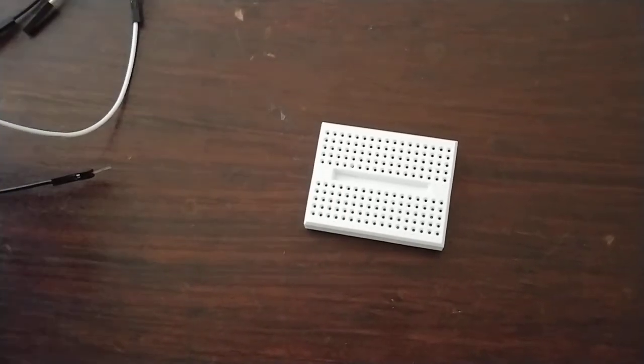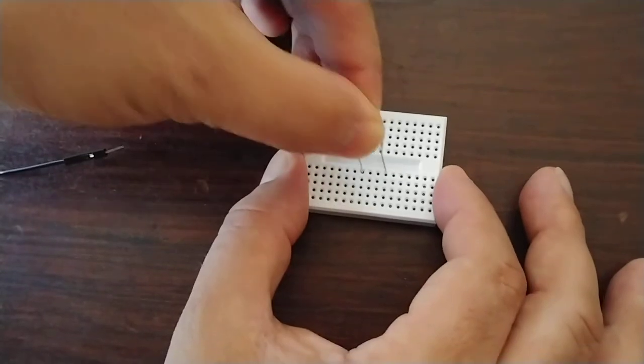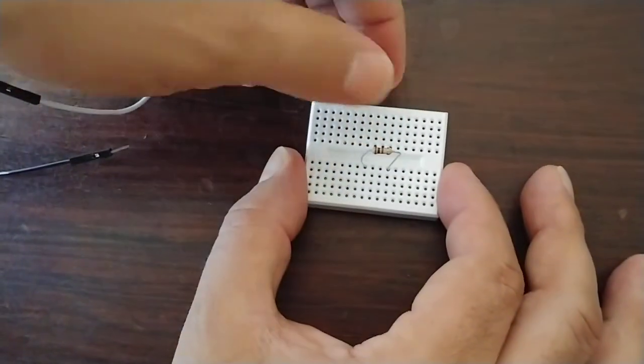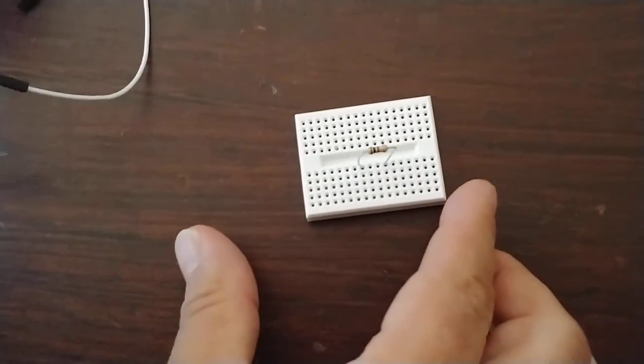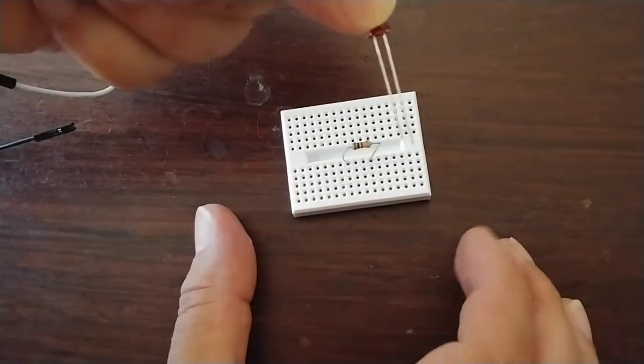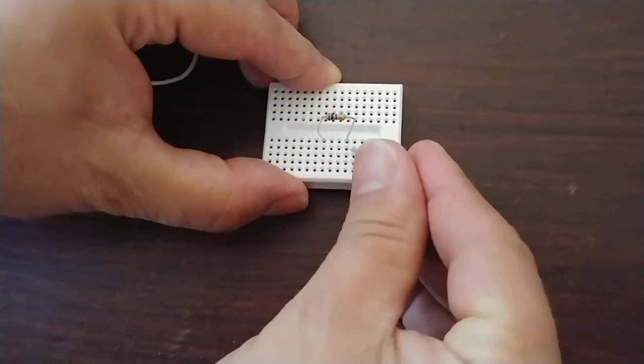Okay, we're going to build our circuit on the breadboard. First we put in the 100 ohm resistor. Then we put in the LED. Notice the long end is going to go to the right.